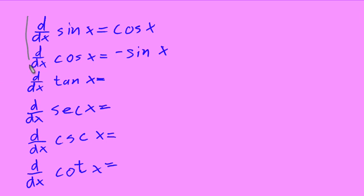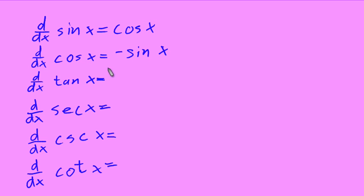I have those two written down again here, just so you have a nice table to work with. The derivative of sine of x is cosine of x, and the derivative of cosine of x equals negative sine of x.